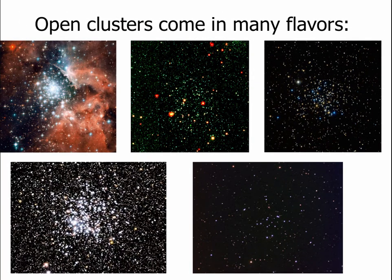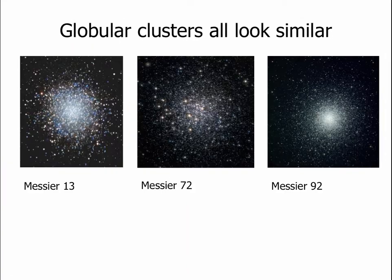The main similarity between open clusters is that all the stars are the same age, and there are a few dozen to maybe a few thousand stars at most. Globular clusters, on the other hand, all look very similar — hundreds of thousands of stars, all looking like a little ball in space, tightly packed. Whereas open clusters have a wide variety, globular clusters all look the same, which suggests they all formed in the same way.